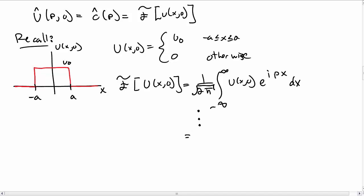The Fourier transform of a step function is something that's kind of well known. I'll just skip the steps and quote the result. It's sine of p times a over pi times p. So this is the Fourier transform of the initial condition.